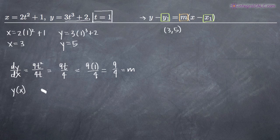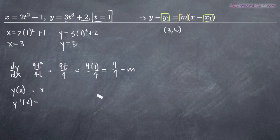Normally you would have an equation y of x equal to something in terms of x, find the derivative y prime of x, plug in your point, and that gives you slope m. In this case, since we have parametric equations, we take the derivative of the parametric equation for y and put it in the numerator, then the derivative of the parametric equation for x in the denominator, simplify, plug in t equals 1, and that's how we find the slope m.